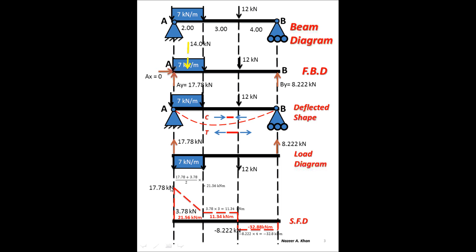From 17.78 kN, we reduce by 14 kN — the total magnitude of the UDL — bringing us down to 3.78 kN at that point. From there, the load diagram shows no influence until we reach the 12 kN point load, so the shear force remains constant as a horizontal line. When it reaches the 12 kN force, it is knocked down: 3.78 minus 12 equals minus 8.22 kN, taking us to the negative side of the shear force diagram.